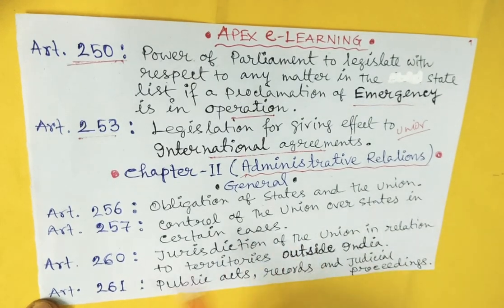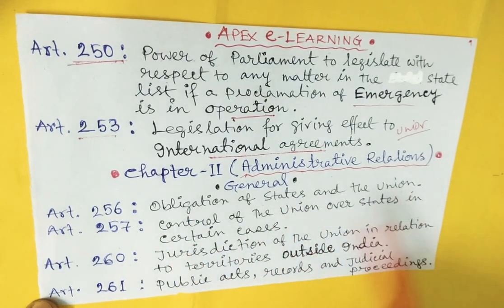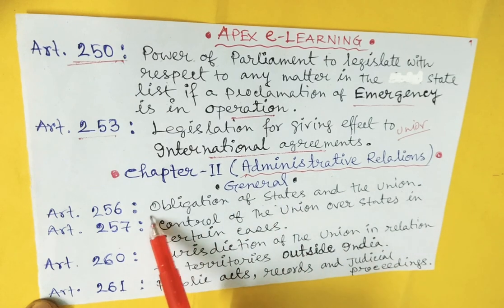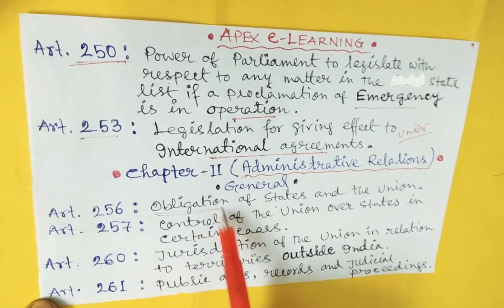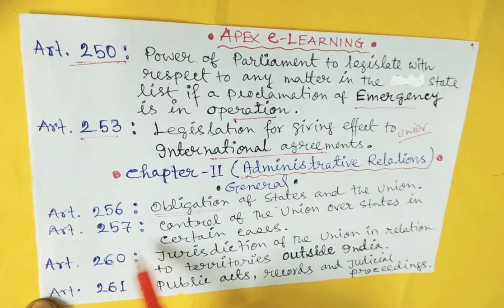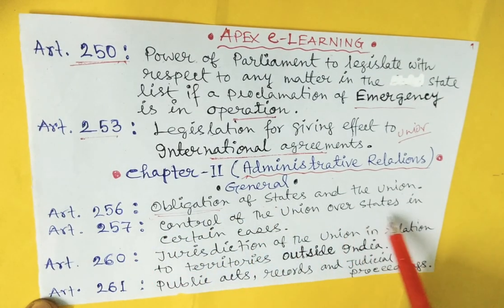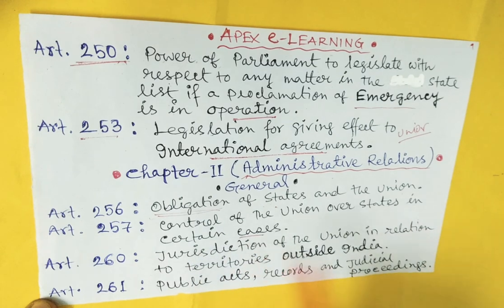Article 256 is the obligation of the states and the union. Article 257 is the control of the union over states in certain cases.